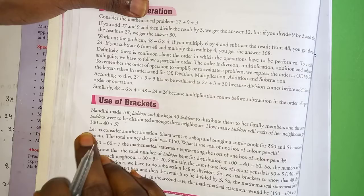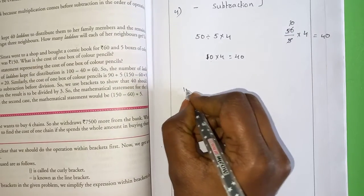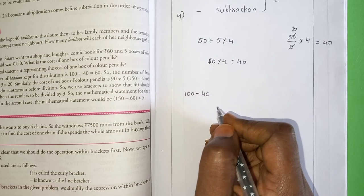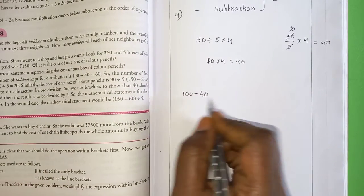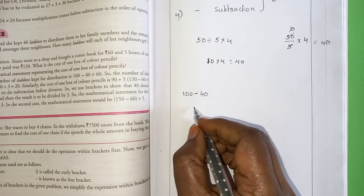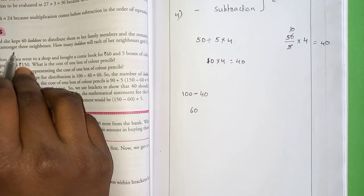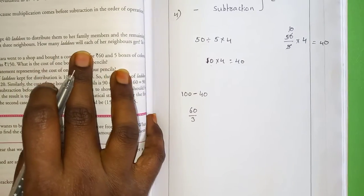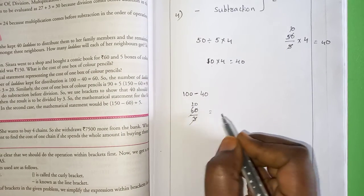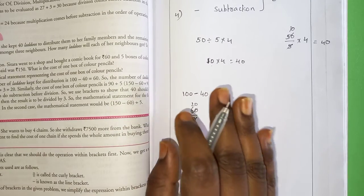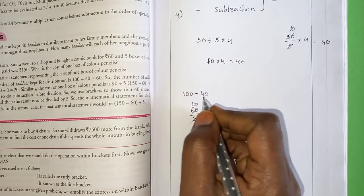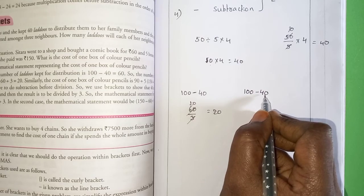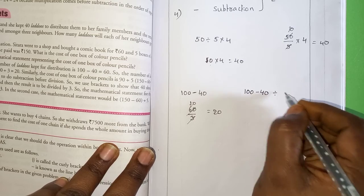How many laddus will each neighbor get? The expression is: 100 minus 40 divided by 3. Nandini prepared 100 laddus; she kept 40 for her family, so 100 minus 40 equals 60 remaining. She distributes those 60 among 3 neighbors, so 60 divided by 3 equals 20. Each neighbor gets 20 laddus. We write the expression as 100 minus 40, the total minus the family share, then divide by 3 for the neighbors.